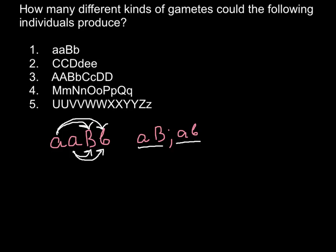Let's also solve example number two using logic, and then I will show you how to solve the rest using the formula. In our second example we have three genes: the first allelic pair is capital C, capital C; the second one is capital D and small d; and the third one is small e, small e.